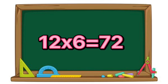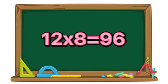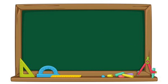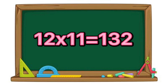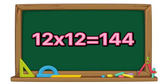12 times 6 equals 72. 12 times 7 equals 84. 12 times 8 equals 96. 12 times 9 equals 108. 12 times 10 equals 120. 12 times 11 equals 132. 12 times 12 equals 144.